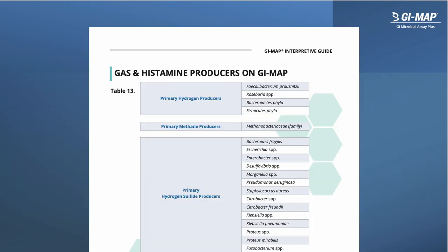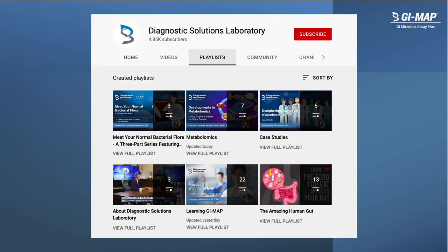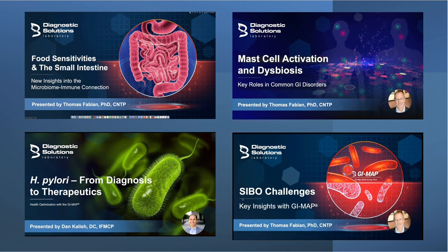Additional resources include functional groupings of various microbes on GI Map to help practitioners recognize important groups, such as those that produce various intestinal gases including hydrogen, methane, and hydrogen sulfide, as well as groups that can produce other important compounds such as histamine and lipopolysaccharide (LPS). Additional guides help practitioners recognize GI Map patterns associated with specific conditions such as food sensitivities, IBS, and SIBO. The Diagnostic Solutions Laboratory YouTube channel includes a wide range of video content to help practitioners learn the basics, with additional videos focusing on working with GI Map in patient scenarios such as food sensitivities, mast cell activation, H. pylori infection, and small intestinal bacterial overgrowth.